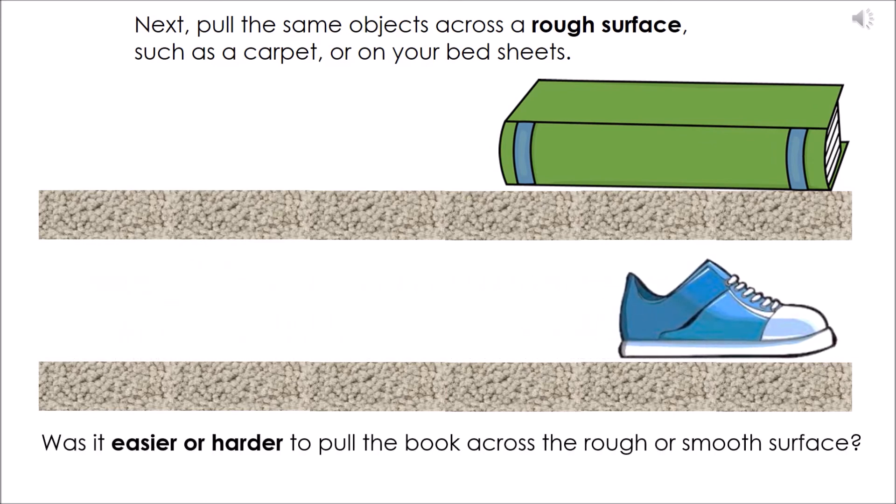Was it easier or harder to pull the book across the rough or smooth surface? What about the shoe compared to the book on the surfaces? Which did you find the most difficult to move? Which had the most friction?